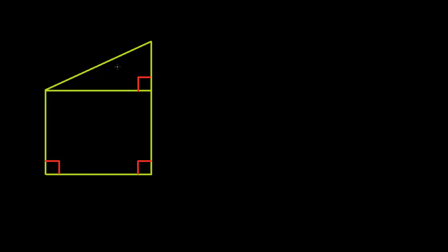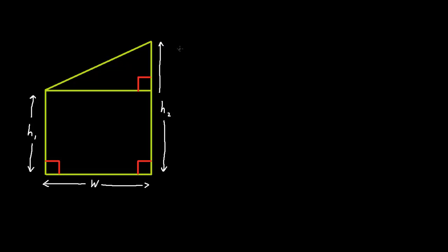This shape we're dealing with is a trapezium. Now, let's give this trapezium a width. Let's also give it a height, h1. And let's give it a height, h2. Now, if this height over here is h2, then this height must be h2 minus h1. Now that we've got this information, we can now begin finding the area of this trapezium and the formula for the areas of all trapeziums.